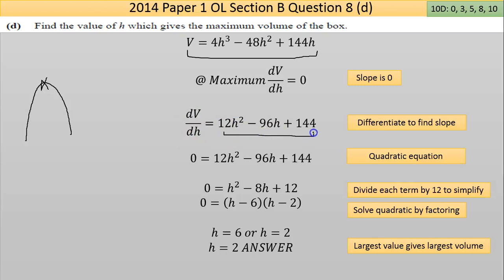If I differentiate this I'm going to get the change in volume with the change in the height, given by this new function. I've achieved this by differentiating the top thing. If I differentiate 4h to the power 3, multiply the power by number in front, take 1 from the power. So 3 times 4 is 12, 3 take away 1 is 2, so I get 12h squared.